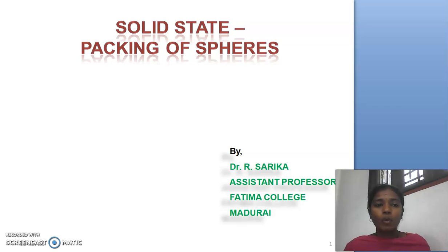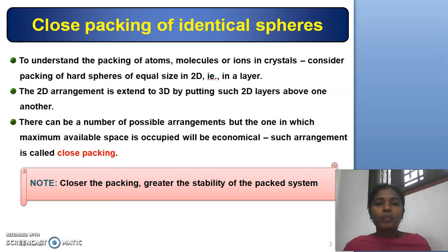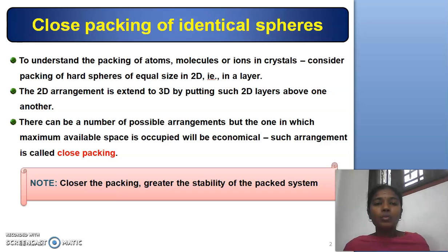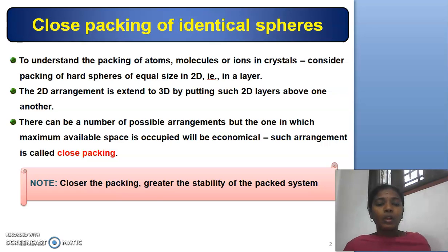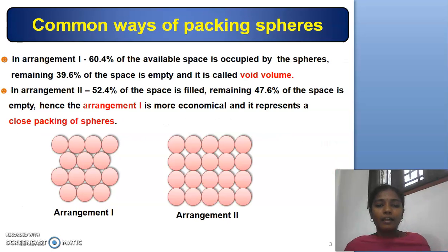Solid State: Packing of Spheres. To understand packing of atoms, molecules or ions in crystals, consider packing of hard spheres of equal size in two-dimensional, that is in a single layer. The two-dimensional arrangement of hard spheres of equal size can be extended to three-dimensional by putting two-dimensional layers one above the other. There are a number of possible arrangements, but one in which the maximum available space is occupied should be economical. Such an arrangement is known as close packing. The closer the packing, the greater the stability of the packed system.